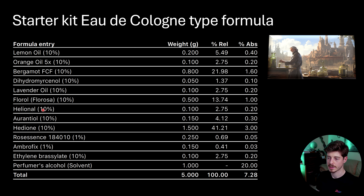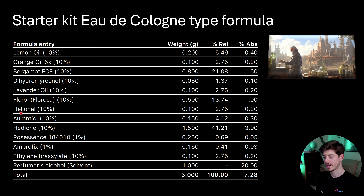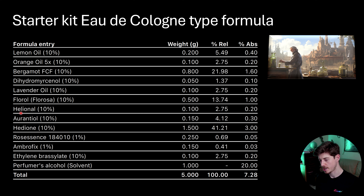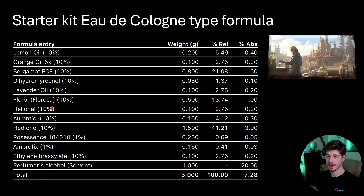Now we have helionol — more of a modern aquatic note. Since we've already got the dihydromercenol, the fresher citrus oils, and the hedion, helionol harmonises with those to push that fresh element further. At 0.2% it's low enough to not come across as a distinctly aquatic smell — rather it adds a fresh, juicy facet that really helps those citrus oils pop. You can increase it to make things more aquatic and modern, or remove it to go more traditional.